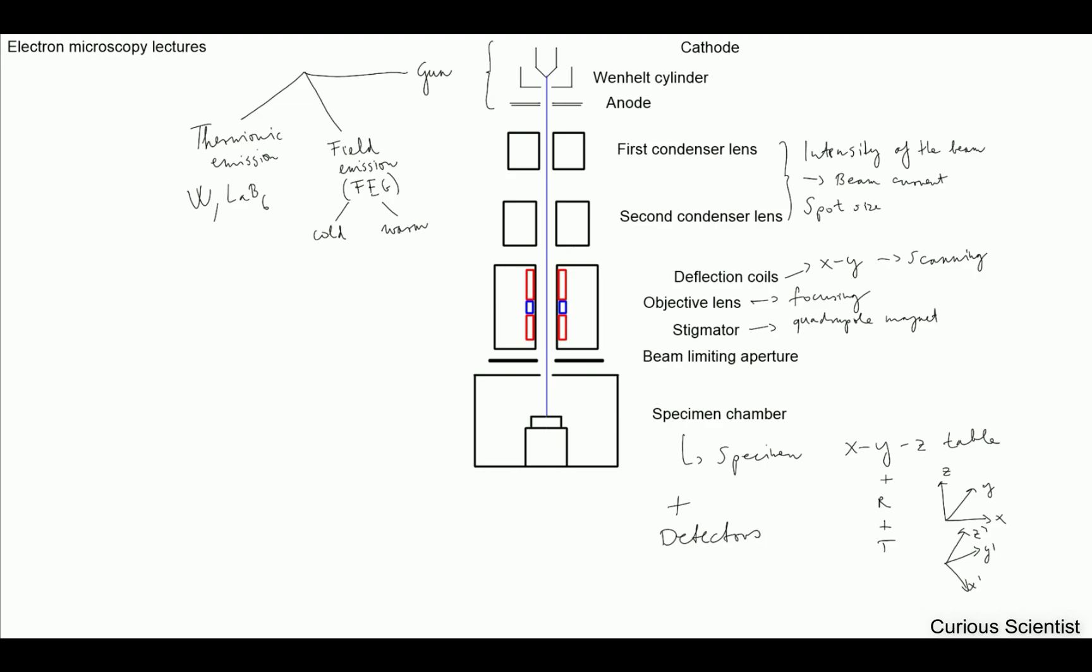In the specimen chamber you have the specimen plus the detectors. These detectors, for example, secondary electrons, backscattered electrons, x-ray photons, and other special detectors which are made by the manufacturers. They try to get some special image created with the device. I will talk a lot about the different interactions in the microscope.